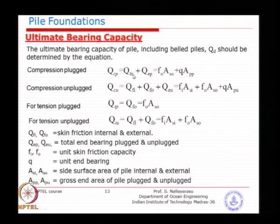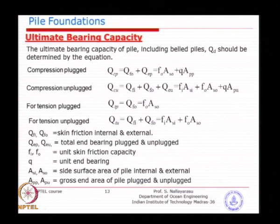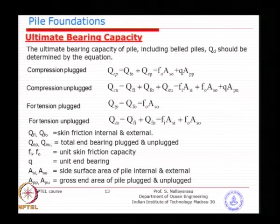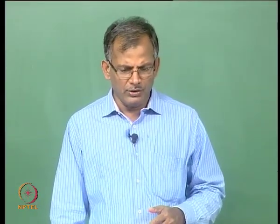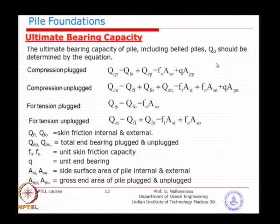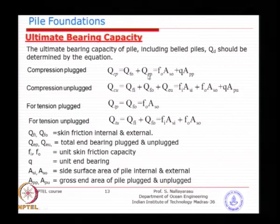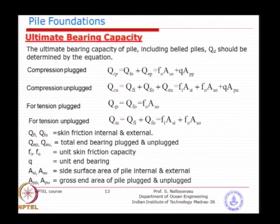You do not need to do both calculations as long as you can determine whether the pile is plugged or unplugged — by comparing the summation of the pile weight plus internal friction with the weight of the soil. If you cannot determine this, find the capacities for both cases — external friction plus full end bearing, versus internal friction, external friction, and annular end bearing — and assign whichever is lower. For tension capacity, only skin friction can be taken because the load is applied upward; end bearing cannot be used.